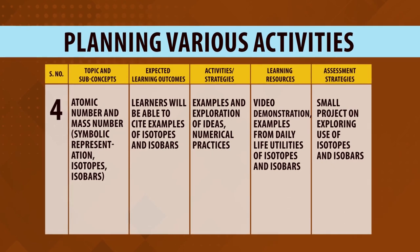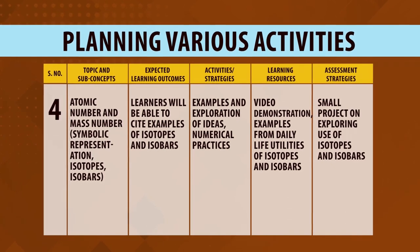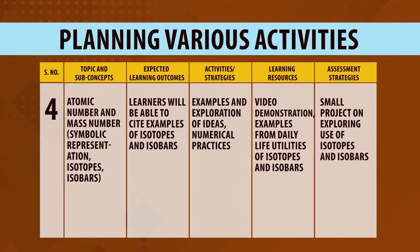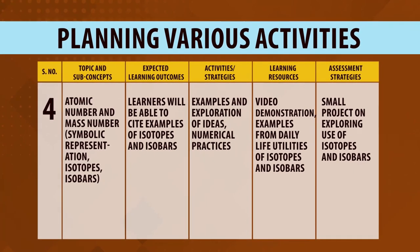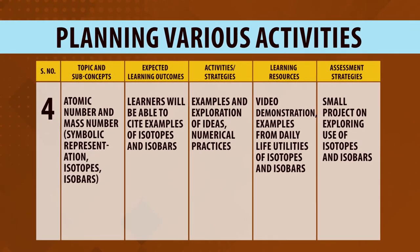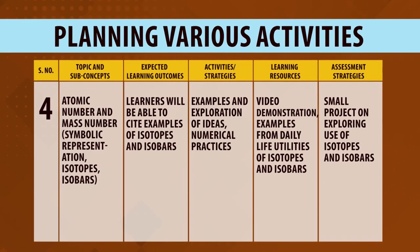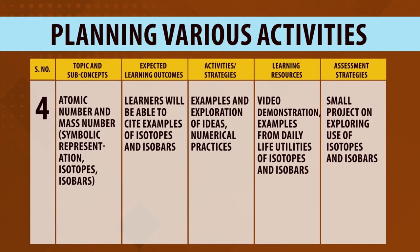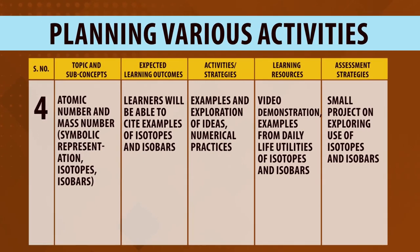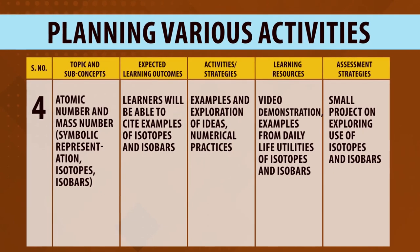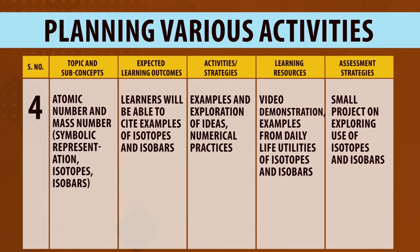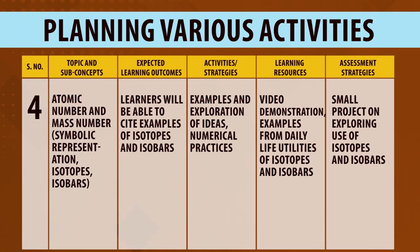From lesson one to lesson four, the whole concept of atom was divided into four sub-concepts. For each sub-concept, one lesson was planned. For each lesson, a learning outcome was decided; for that learning outcome, activities and strategies were planned; accordingly, learning resources were identified; and assessment strategies were planned. You can see the variety in the assessment strategies, the learning resources identified, and the academic activities planned to deliver these concepts. This is the beauty of a unit plan.